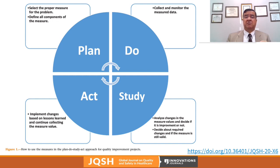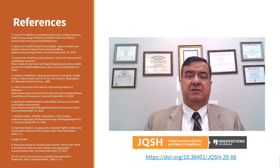In the Do phase, you collect and monitor the measured data. In the Study phase, you analyze changes in the measure values, decide if there is improvement, decide about required changes, and assess whether the measure is still valid — you may discover the measure is not the best, or that you need to add another measure.